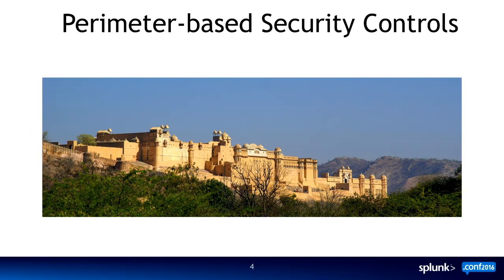If we talk about traditional security controls, it's all parameter-based control. This is a picture of a fort — you make big walls and it stops enemies from coming in. That's what our current generation of security tools does: intrusion detection systems, intrusion prevention systems, firewalls — everything is parameter-based control. But there are no perimeters anymore. What happens if somebody comes inside your enterprise with proper credentials? They will come in and you can't stop them.